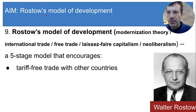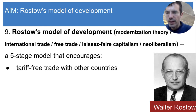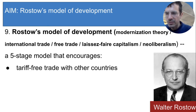First, get rid of tariffs — tariff-free trade with other countries. That means countries should let any foreign company sell its goods in their country without charging them anything extra. You might notice that this is already a major contrast to the self-sufficiency model, which said that countries should have tariffs in order to protect domestic industries. Rostow's model tells countries to get rid of tariffs.